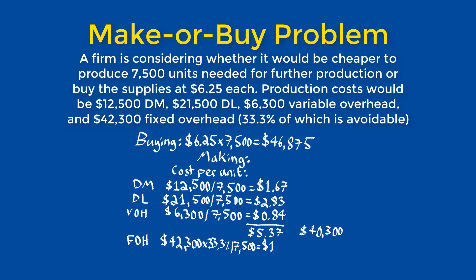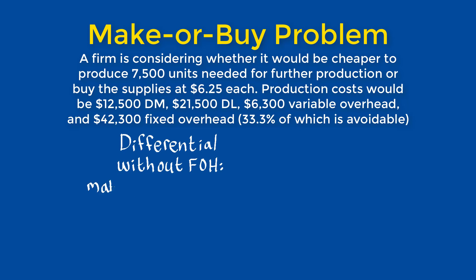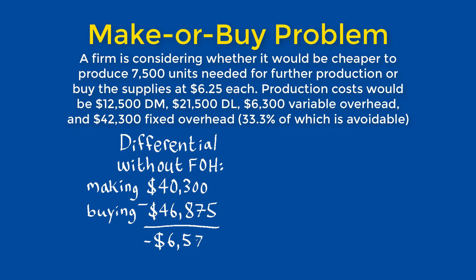Since part of the fixed overhead is avoidable, the fixed overhead relevant cost per unit is $1.88, raising the total to $7.25 and the total cost of production to $54,400. This example highlights the importance of making sure you identify all relevant costs, including parts of irrelevant costs, if part of those irrelevant costs are avoidable.